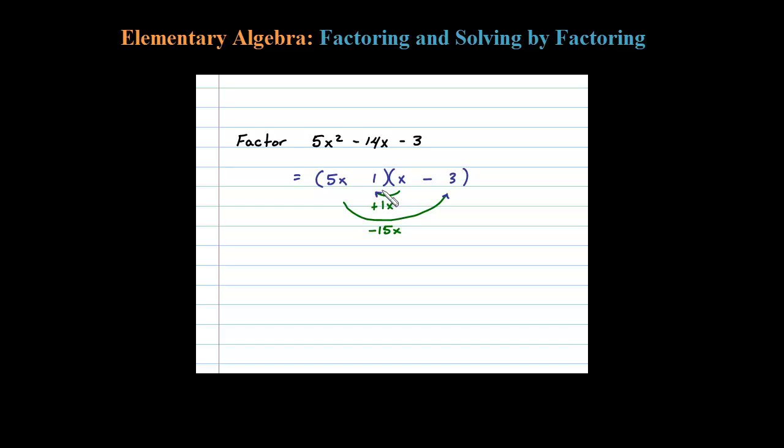But then I better check the end term, the sign of the end term. So +1 times -3 is -3. It checks out. Eventually we should be able to do this in our head, so I'm going to erase this step.